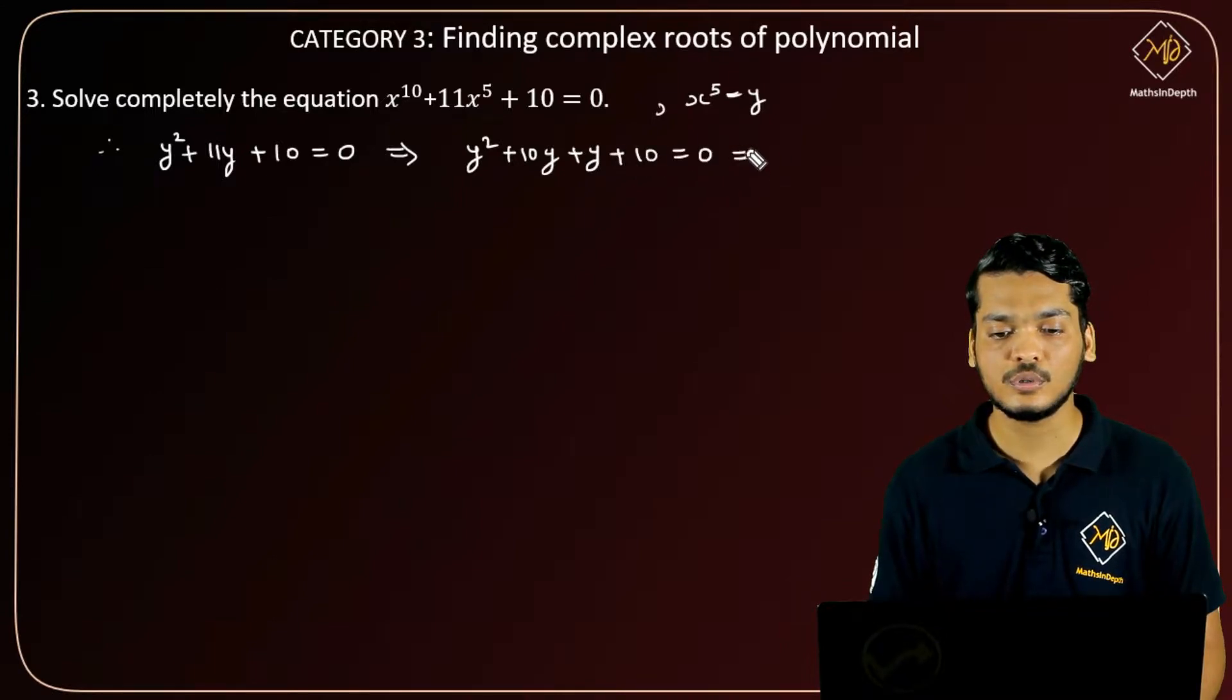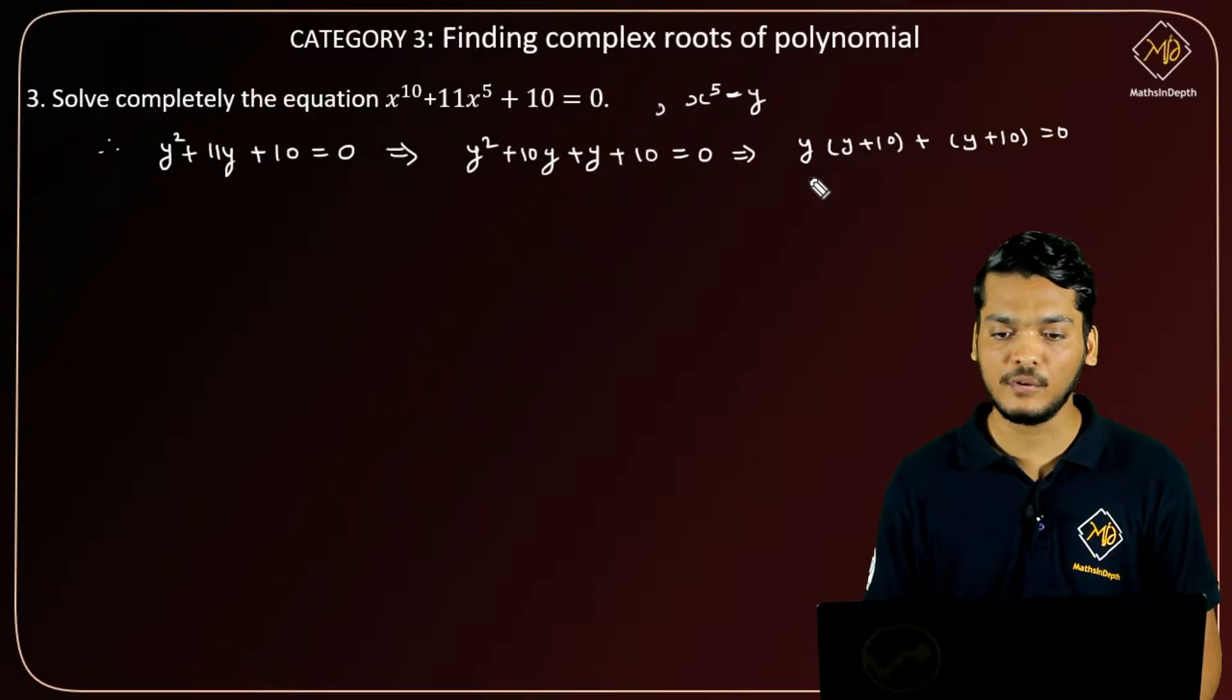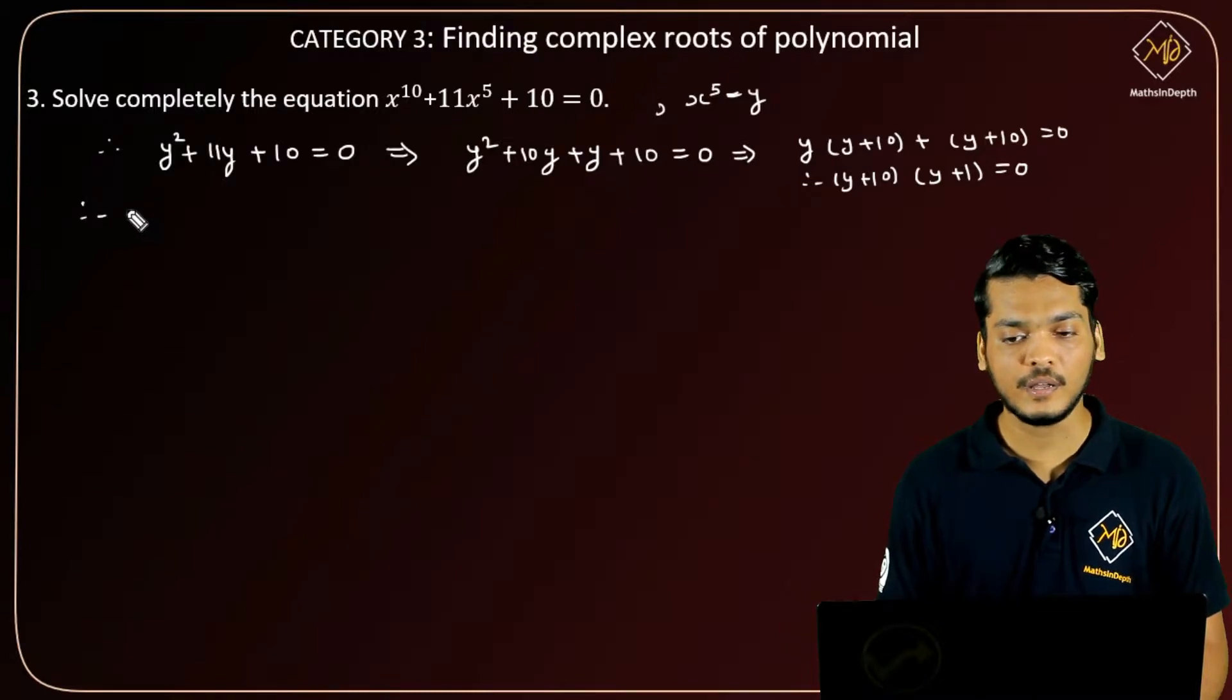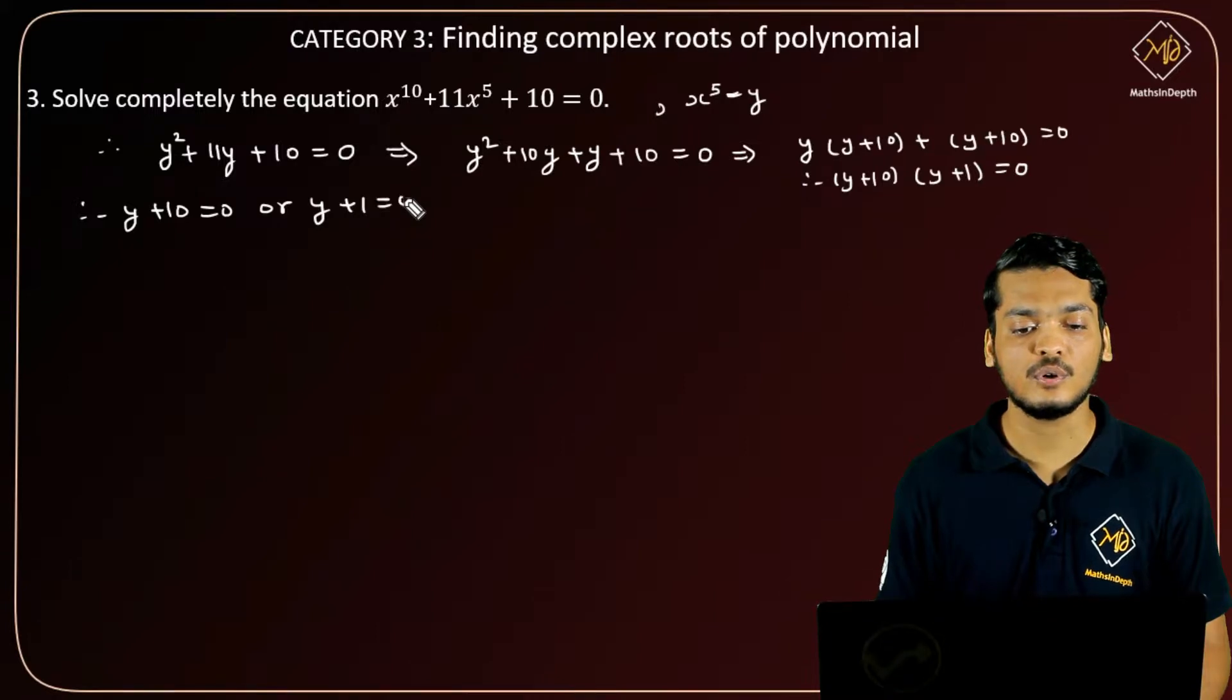equals to 0. Therefore, (y + 10)(y + 1) = 0, so we can write y + 10 = 0 or y + 1 = 0.